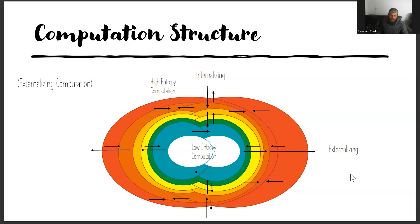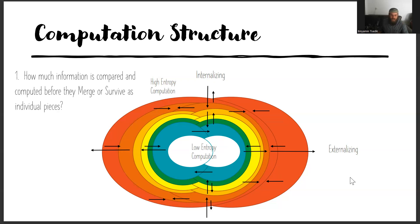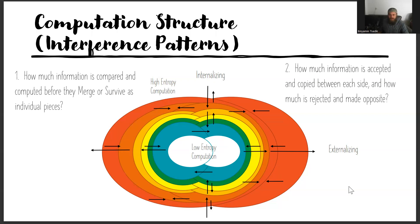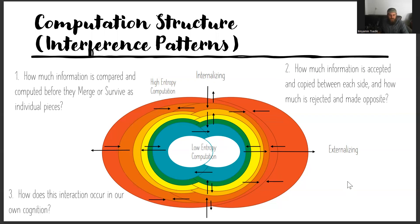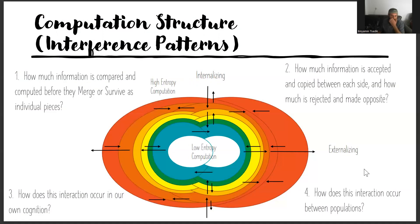Now let's get into the definition of externalizing, but before that I've got four questions. How much information is compared and computed before they merge or survive as individual pieces? How much information is accepted and copied between each side, and how much is rejected and made opposite? How does this interaction occur in our own cognition — between different parts of our brain? And then how does this interaction occur between populations? Just four questions to keep in mind when looking at this information model.